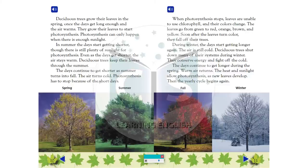The days continue to get shorter as summer turns into fall. The air turns cold. Photosynthesis has to stop because of the short days. When photosynthesis stops, leaves are unable to use chlorophyll, and their colors change. The leaves go from green to red, orange, brown, and yellow. Soon after the leaves turn color, they fall off their trees.